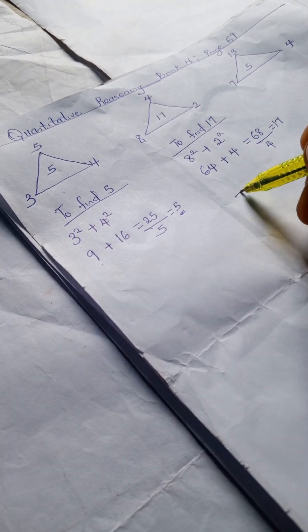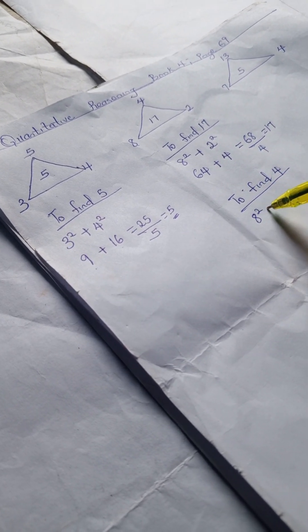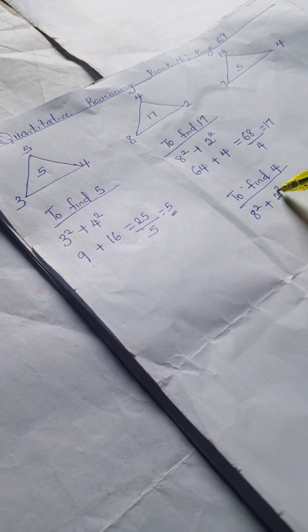To find four, we're going to have eight squared plus two squared. Eight squared gives us sixty-four, and two squared gives us four, so sixty-four plus four is sixty-eight. Then sixty-eight divided by seventeen gives us our four.